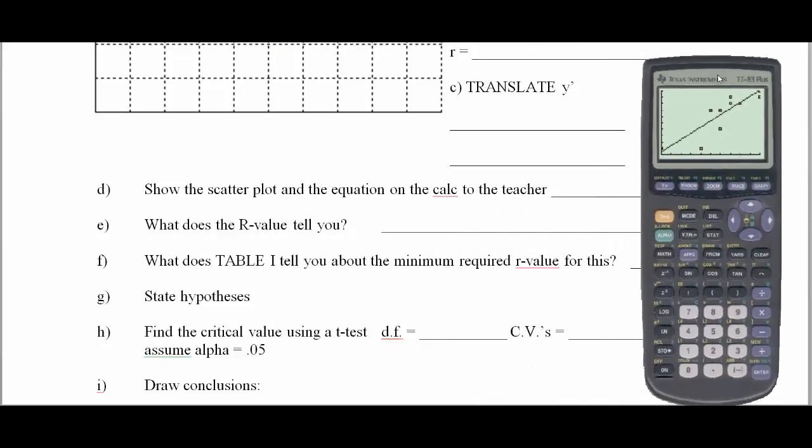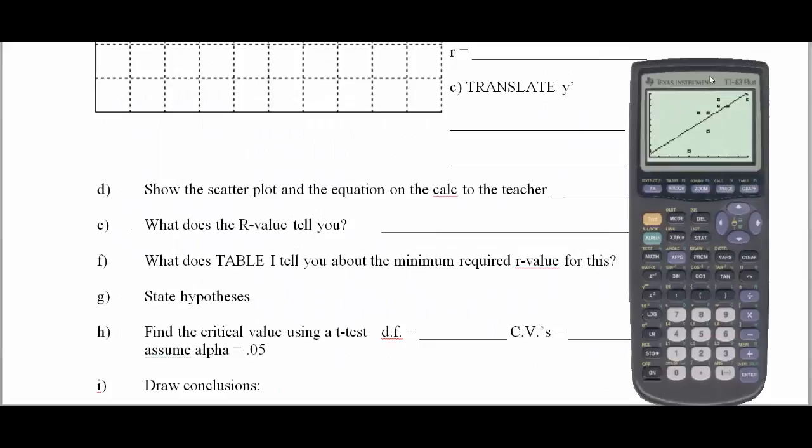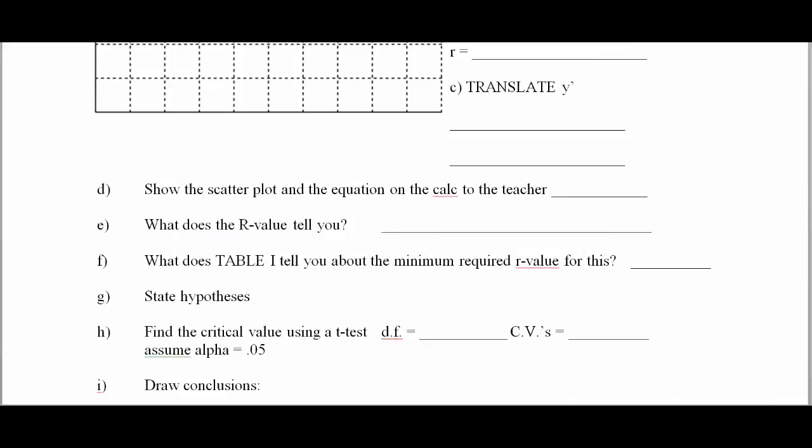Now let's get back to the non-calculator side of this work. So what does the R value tell you? If you have the R table in front of you, you can actually compare your table value to your R value and make a judgment. But if you have no table I in front of you, you're going to have to do a little gut check to tell me whether it's strong positive, weak positive, strong negative, or weak negative. In this case, .86, what I would guess is this would be strong positive.